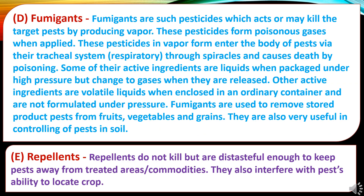Next are fumigants. Fumigants are pesticides which kill the target pest by producing vapour — they form poisonous gases when applied. These pesticides in vapour form enter the body of pests via their tracheal or respiratory system through spiracles and cause death by poisoning. Some active ingredients are liquids under high pressure but change to gases when released; others are volatile liquids in ordinary containers. Fumigants are used to remove stored product pests from fruits, vegetables and grains, and are also useful for controlling pests in soil. Repellants do not kill but are distasteful enough to keep pests away from treated areas or commodities and also interfere with the pest's ability to locate crops.